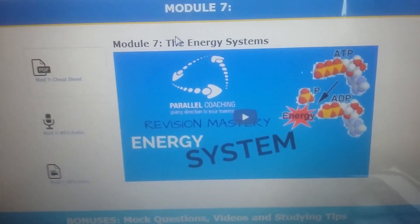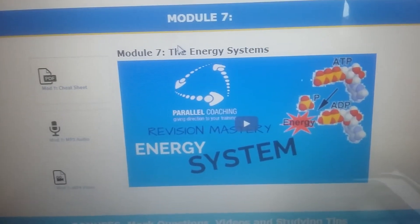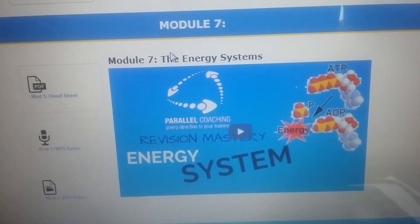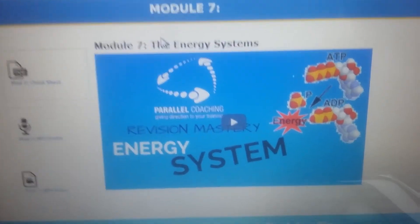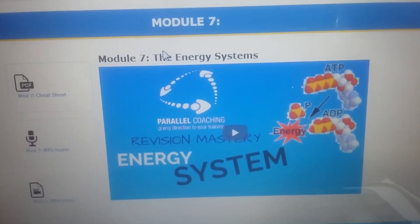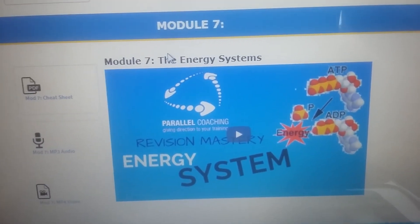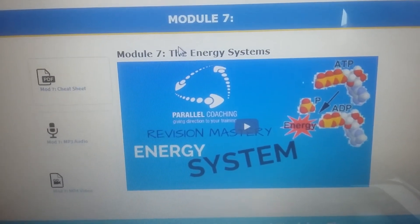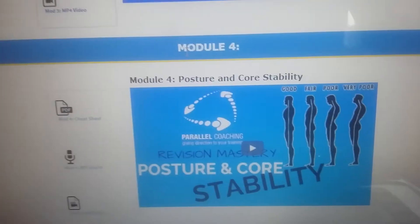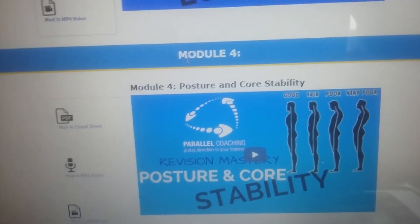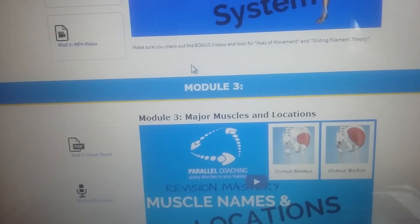When you get in the exam and you find a question, you want to be able to put that question into each of the filing systems. You'll have a filing system in your brain for each of these modules and you need to know which filing system to go to. My suggestion is that when you're reading the question, first decide which of these modules that question comes from — it will help you start to retrieve the answer.